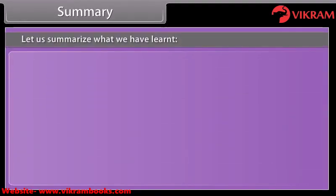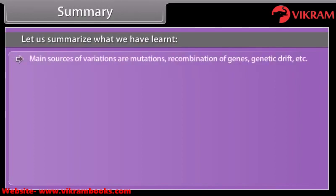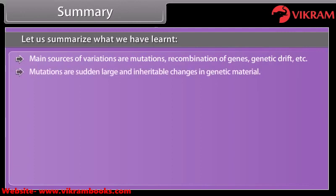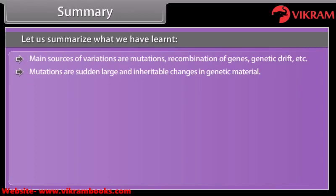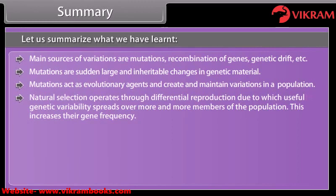In summary: the main sources of variations are mutations, recombination of genes, genetic drift, etc. Mutations are sudden, large, and inheritable changes in genetic material. Mutations act as evolutionary agents and create and maintain variations in a population. Natural selection operates through differential reproduction, causing useful genetic variability to spread over more and more members of the population, increasing their gene frequency.